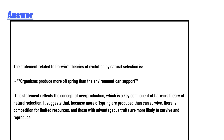The statement related to Darwin's theories of evolution by natural selection is: organisms produce more offspring than the environment can support. This statement reflects the concept of overproduction, which is a key component of Darwin's theory of natural selection. Because more offspring are produced than can survive, there is competition for limited resources, and those with advantageous traits are more likely to survive and reproduce. This is the correct answer.